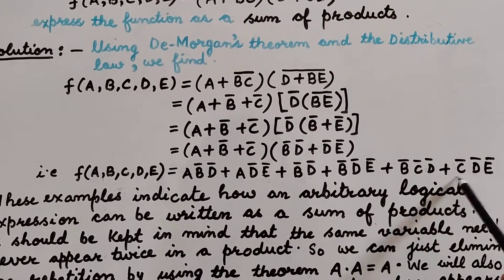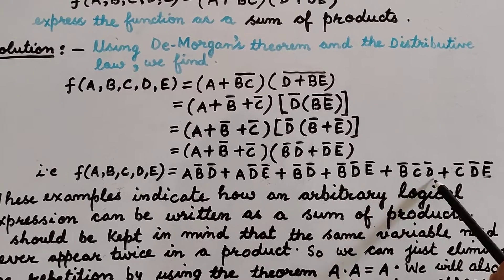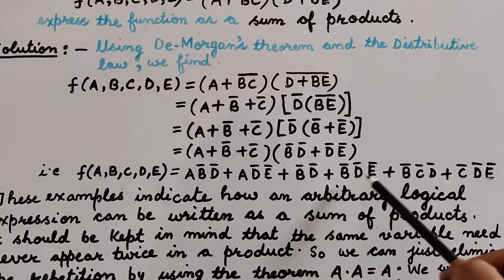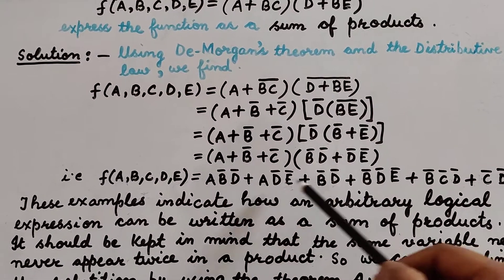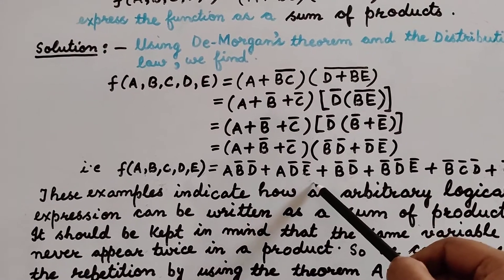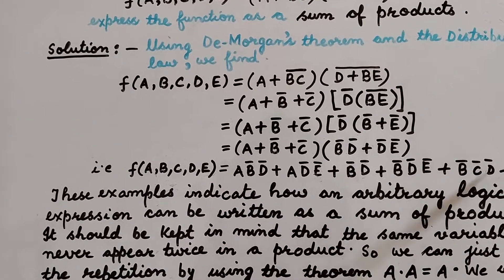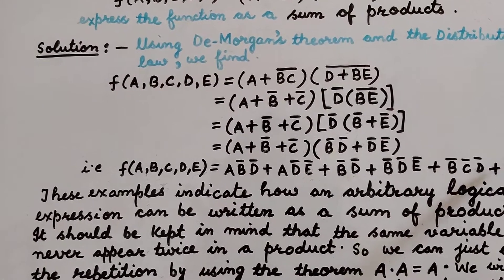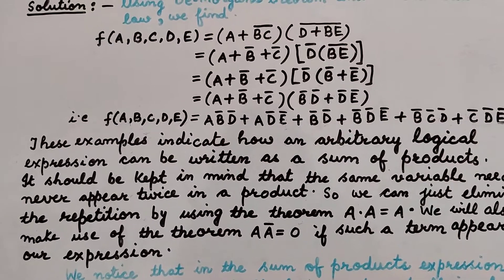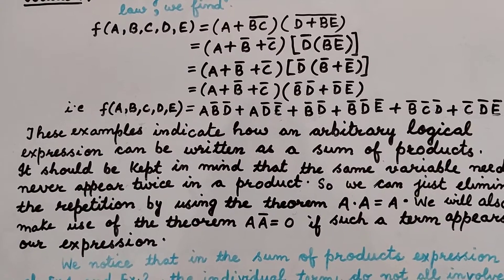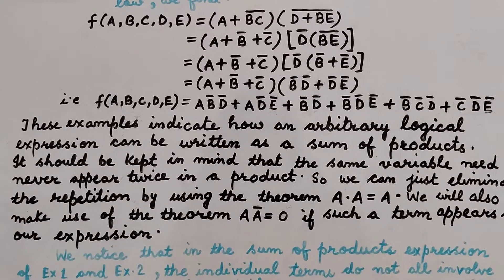We find that each individual term is a product of variables: C complement·D complement·E complement, B complement·C complement·D complement, B complement·D complement·E complement, B complement·D complement, A·D complement·E complement, and A·B complement·D complement. The individual terms are products of variables and we are taking the sum of all these terms. That is why this form is called the Sum of Products form.